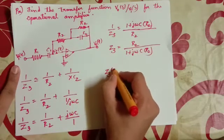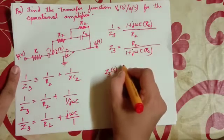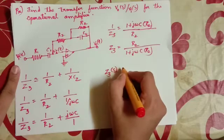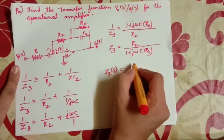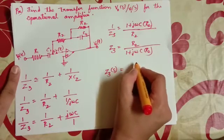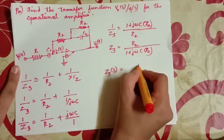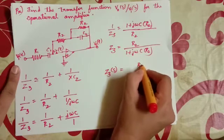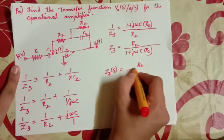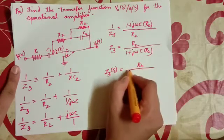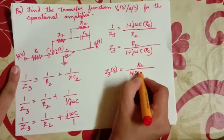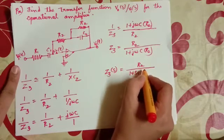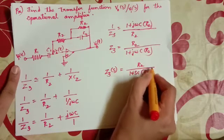So Z3(s) is equal to R2 divided by (1 + s·C·R2).